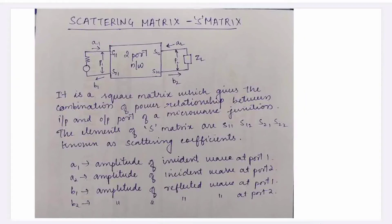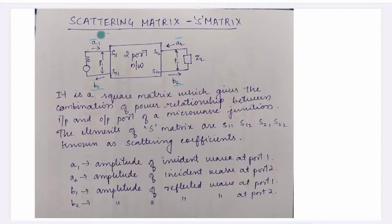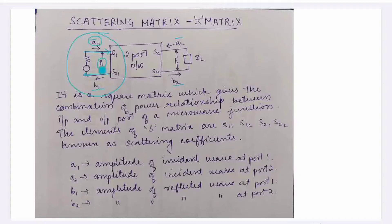Now we can select the S-matrix. We consider a two-port network. We have a1, a2, b1, and b2. Port P1 is one side. The parameter a1 is basically the amplitude of the incident wave at port P1.